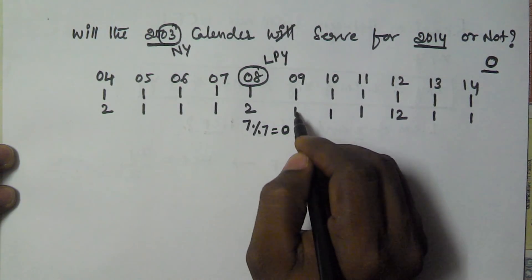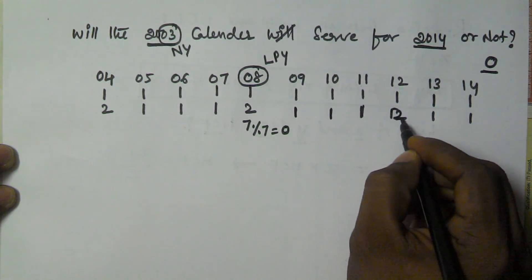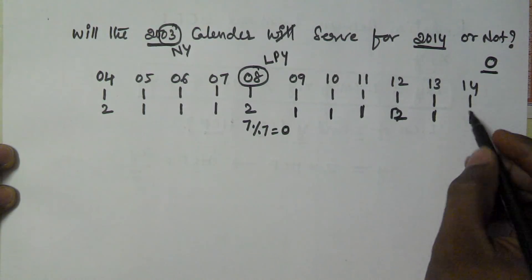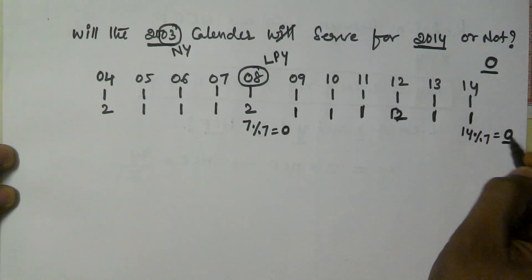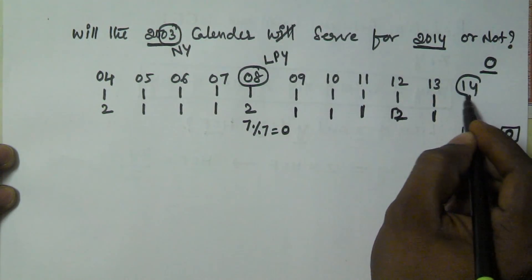So, 2007, 2008, 2009, 2010, 2011, 2012, 2013, 2014. Here we are getting 14. 14 divided by 7, and we are taking the remainder 0. That means the number of odd days from 2003 to 2014 is 0.